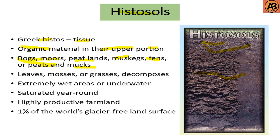Histosols form when organic matter such as leaves, mosses, and grasses decomposes more slowly than it accumulates, due to decreased microbial decay rates. They are found in extremely wet areas that are saturated year-round and can be highly productive farmland. They occupy about 1% of the glacier-free land surface.